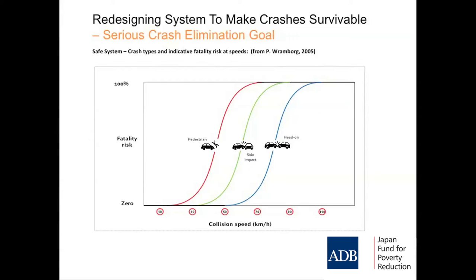If you're a pedestrian struck at about 30 kilometres an hour, there's a fairly low probability of being killed — about 10%. But above that, the risk goes up very quickly. If you are in a side impact crash above 50 kilometres an hour, that impact will probably kill the person on that side of the vehicle — that's an intersection crash. If you're involved in a head-on crash with modern cars above 70 kilometres an hour, you go above that 10% likelihood of being killed.